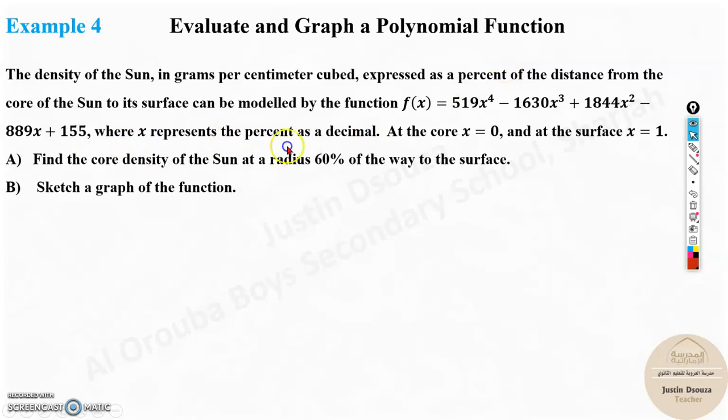Where x is representing the percentage as a decimal, at the core x equals 0, and the surface x is equal to 1. The core of the sun, x is 0, whereas over here, this is 1. So it is about 100%. This is the radius, 0 and 1.